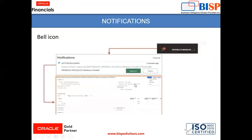The person who is going to approve will get a notification in the bell icon. Under 'Action Required,' the expense report approval for the payable specialist is shown, with two options: approve or reject. The person can directly approve from the notification, or click on the hyperlink to view further details of the expense report.